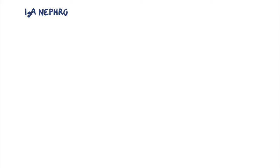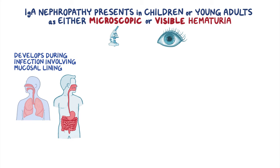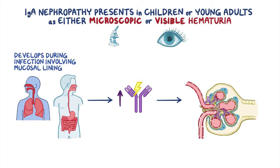IgA nephropathy frequently presents in children or young adults as either microscopic or visible hematuria, meaning that it can be seen under a microscope or with the naked eye. It typically develops during an infection involving the mucosal lining, like infections of the gastrointestinal or respiratory tract. In these sorts of infections, the production of the abnormal IgA antibody gets ramped up, leading to more accumulation in the glomerulus, causing inflammation and injury.